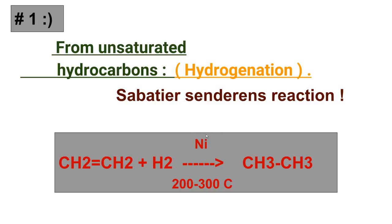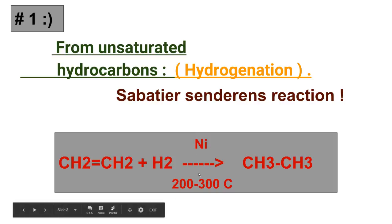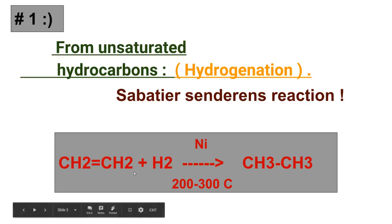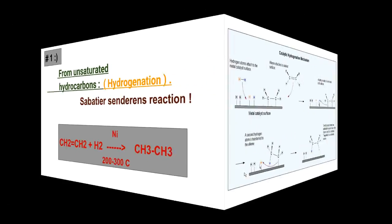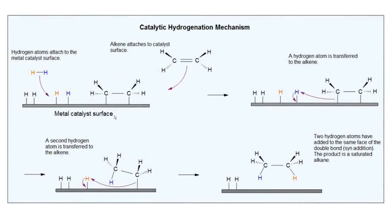Nickel catalyst is used; platinum and palladium can also be used but they are very expensive, so usually nickel is used. This reaction is carried out at 200 to 300 degrees centigrade. For example, ethene is converted into ethane by the addition of hydrogen in the presence of nickel catalyst. This hydrogenation process is interestingly used to convert vegetable oil into vegetable ghee.